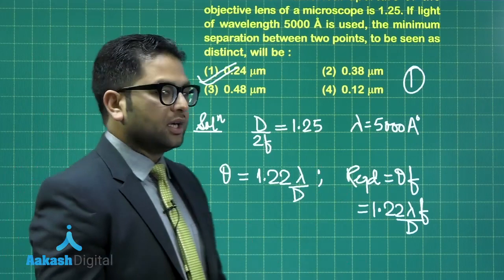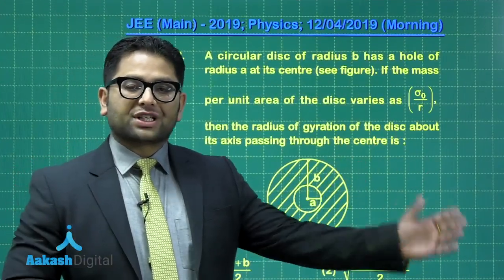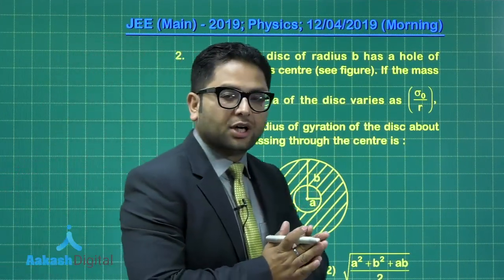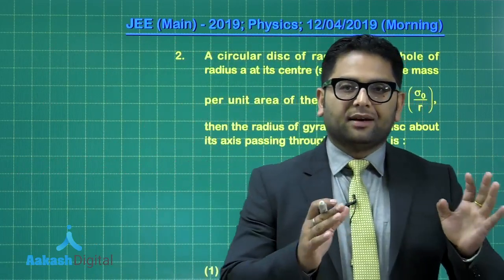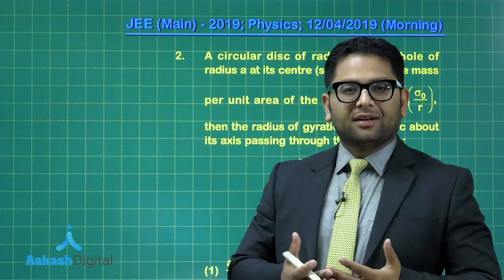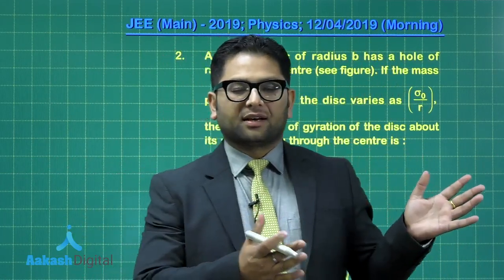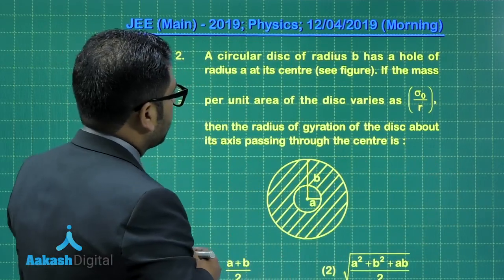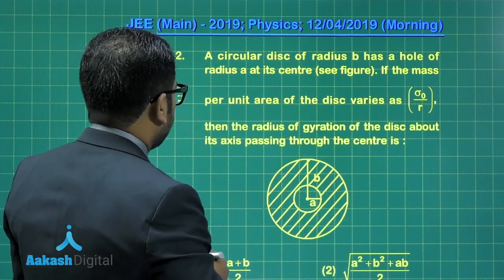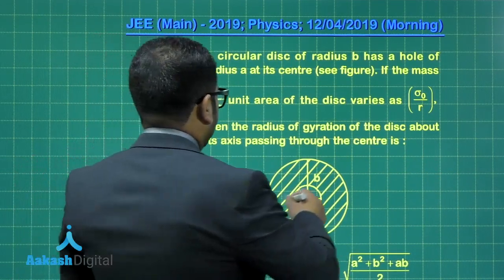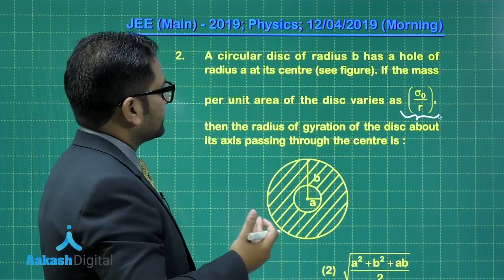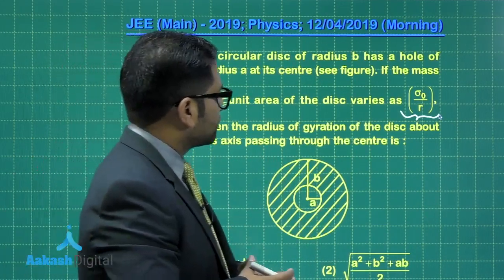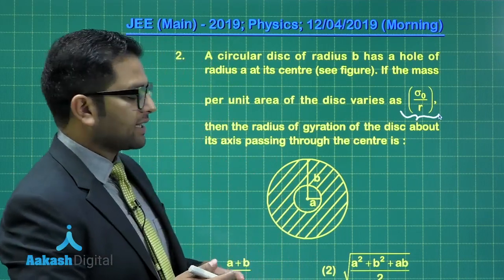The second question I have is from rotational dynamics, and the question is related to calculation of moment of inertia, not a straightforward one. Non-uniform distribution has been given, so it involves integration. However, let me tell you, the question is not very difficult. A circular disk of radius B has a hole of radius A at its center, and mass per unit area of the disk varies as sigma naught divided by r. So that's the surface mass density. You need to calculate the radius of gyration of the disk about its axis passing through the center.